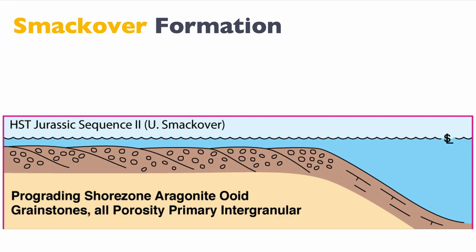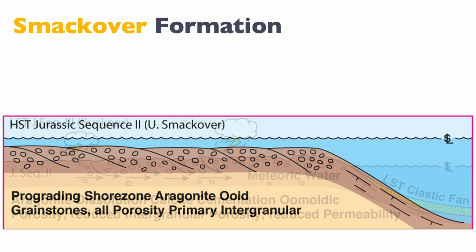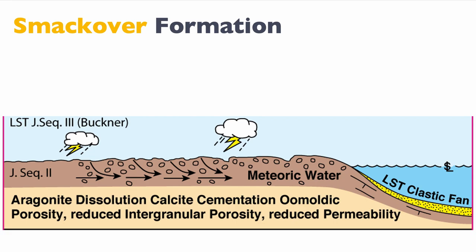Let's look at a concrete example: the Smackover Formation in the Jurassic. This is an important reservoir in the southern U.S. states. During the HST, we have prograding clinoforms and the Smackover is effectively an oöidal shelf, so lots of ooids were deposited with a lot of primary intergranular porosity in grainstone. But then comes the lowstand during Jurassic sequence 3, and during the lowstand we have an LST clastic fan, but also meteoric diagenesis happening at the exposed surface of the Smackover Formation, so that means we dissolve aragonite.